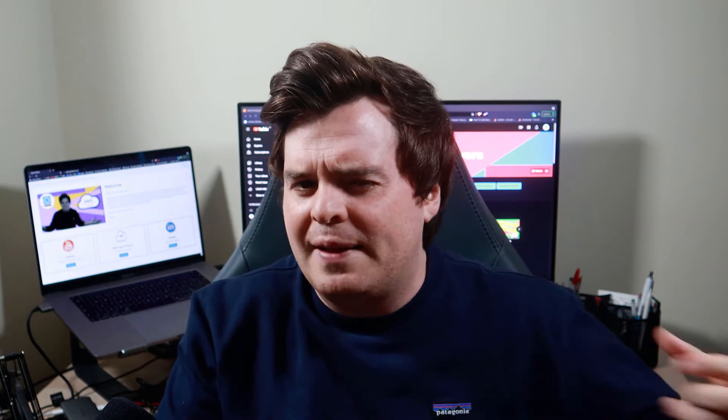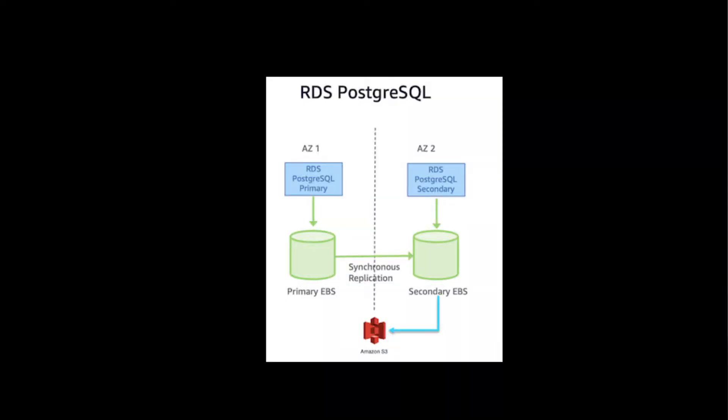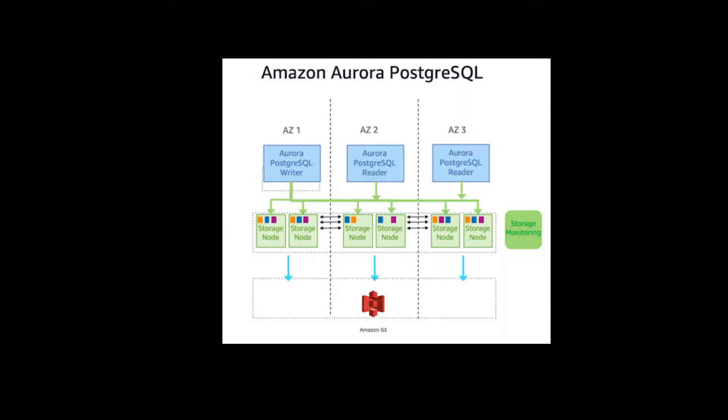Let's get down into the business and take a look at the actual architecture behind these two services — this is where one of the core differences comes up. If we look at the RDS Postgres option, it looks more like a traditional database: there's a server, there's a replication instance if you want it, the Postgres engine is installed on the server as you normally would, and the storage is attached to that server. If we then look at the Aurora architecture, it's different — it operates off things called storage nodes which go across availability zones.